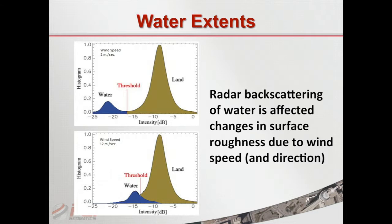Here I've shown a diagram of a land and water histogram. What we're trying to do is find that threshold because our first task is to guess what the wind speed is. At about 2 meters per second, water and land are quite nicely separated and it's easy to find a threshold. But as the wind picks up to about 10 or 12 meters per second, the water histogram starts to slide into the area where the land is, and you get a lot more ambiguous pixels.